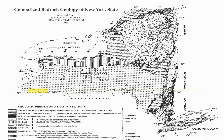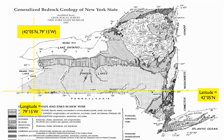Here we have Jamestown. Jamestown has a latitude just above 42 degrees, so it's going to be 42 degrees 5 minutes north. And it has a longitude that's a little bit past 79 degrees, so it can be about 79 degrees 15 minutes west. Written as a coordinate: 42 degrees 5 minutes north, 79 degrees 15 minutes west.